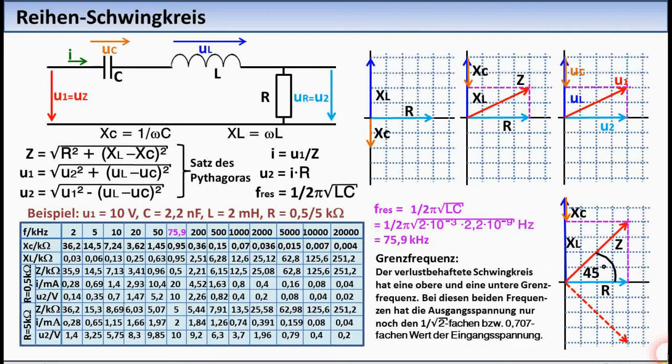For this series resonant circuit, the so-called resonance curve is to be calculated and drawn. The resistor R stands for the losses of the resonant circuit. For this purpose, the output voltage U3 is calculated as a function of frequency. The input voltage should be a constant 10 volts. For the frequencies specified in the table, the values of the total impedance Z are first determined. With the help of Z, the values of the current I flowing through all components can be determined, and finally the partial voltage UR equal to U2 can be calculated.